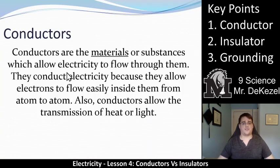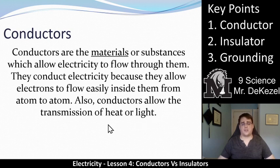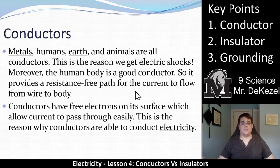First of all, conductors. Conductors are the materials or substances that allow electricity to flow through them. When I show you some examples, you'll notice a theme — essentially, it's metals. They conduct electricity because they allow electrons to flow easily inside them from atom to atom. Conductors also generally allow the transmission of heat or light energy through them. Essentially, conductors allow electricity or electrons to flow. These are often metals.